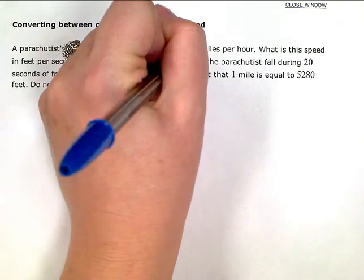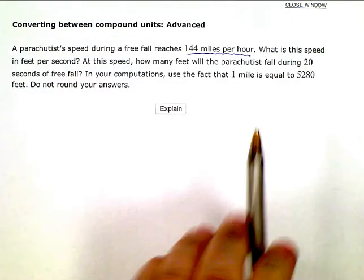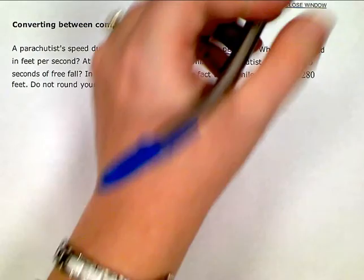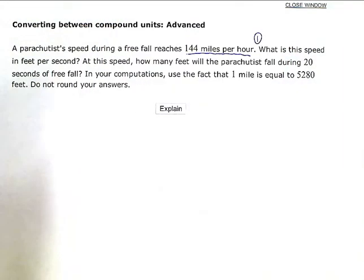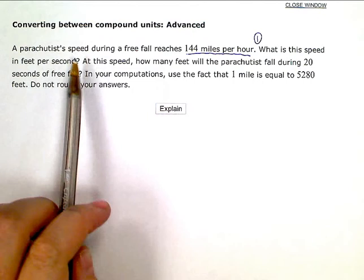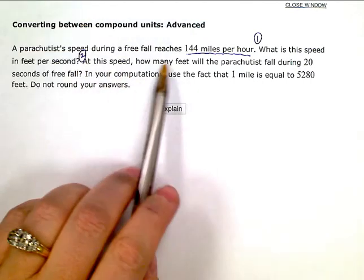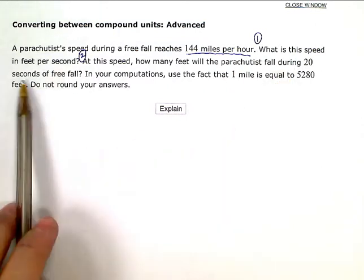So that's my beginning rate here. And my first question is, what is this speed in feet per second? That's question number one. Question number two says, at this speed, how many feet will the parachutist fall during 20 seconds of free fall?